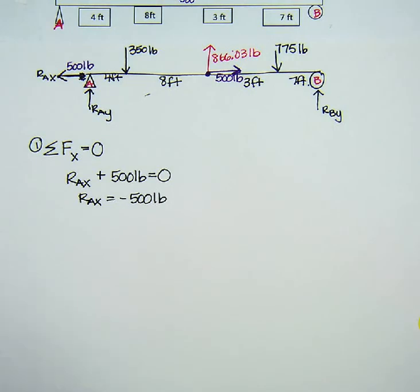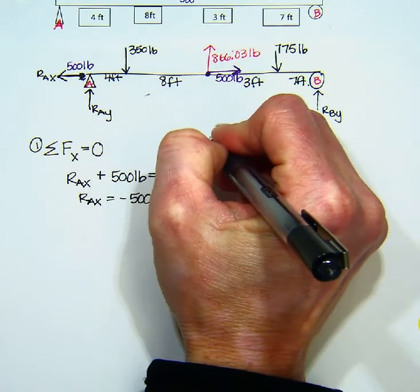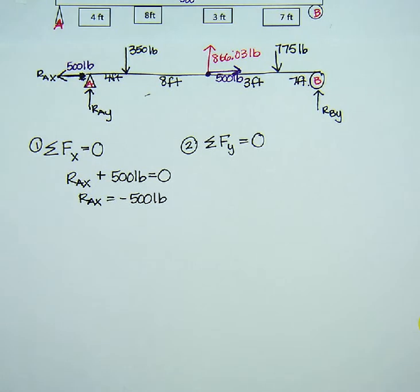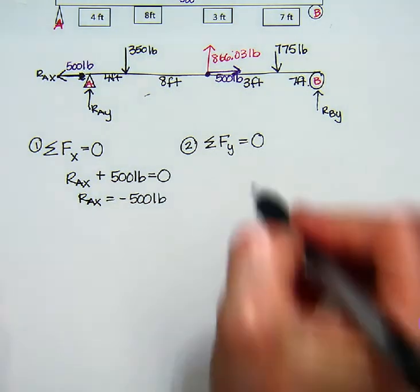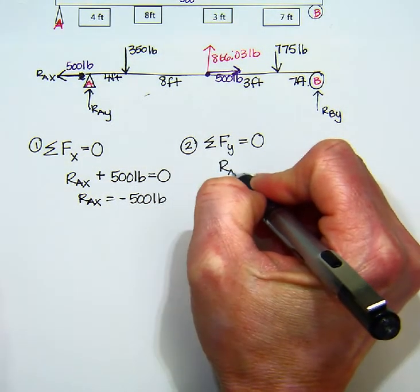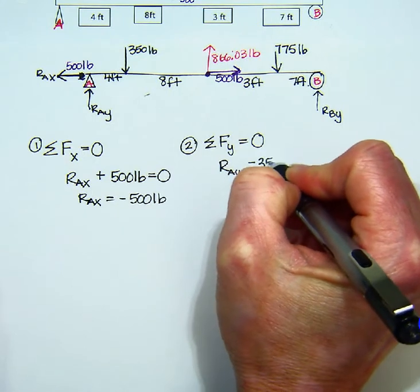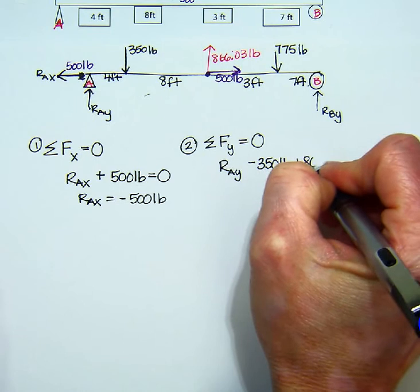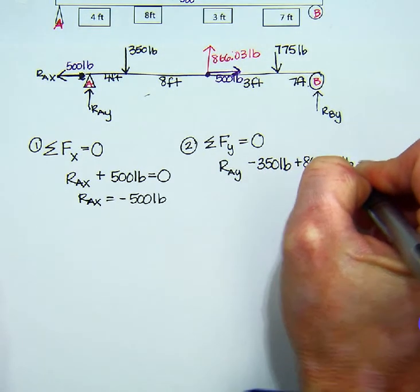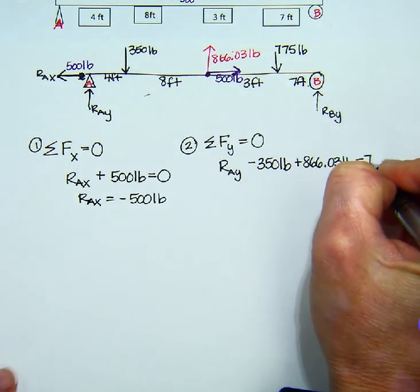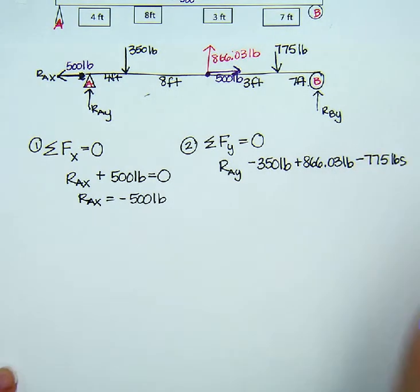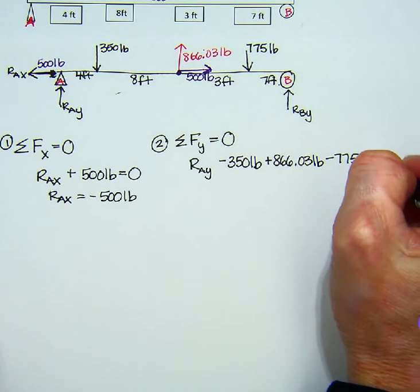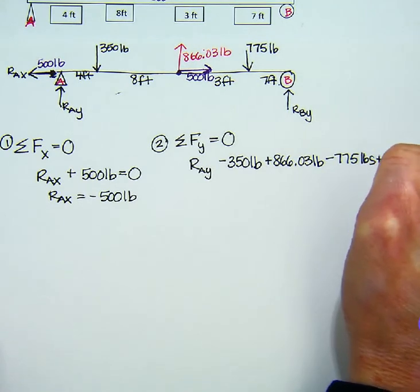So next step two, we need to show that the sum of the forces in the y direction are equal to zero. So I have RAY, negative 350 pounds, plus 866.03 pounds, negative 775 pounds. I'm running out of space here again. And plus RBY, all that has to equal zero.